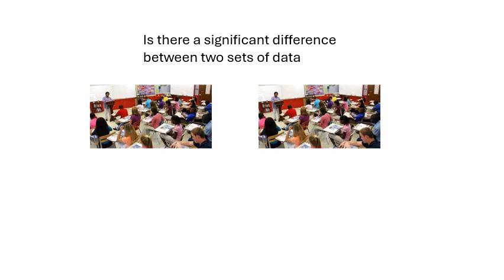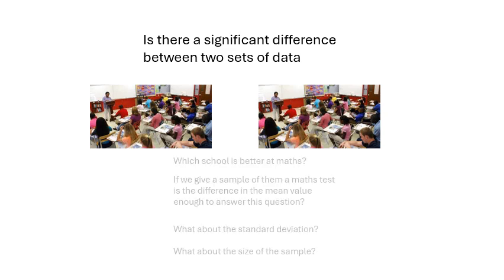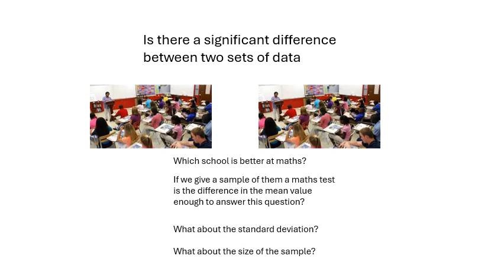So, is there a significant difference between two sets of data? We've got two lots of data — is there a significant difference between them? For example, let's say you've got two schools, School A and School B, and I want to know which school is better at maths. What we do is we could give, in a particular year group, all of the students a maths test and then take a sample, or we could take a sample of students. Let's take ten students from each school, give them a maths test, and then work out the average.